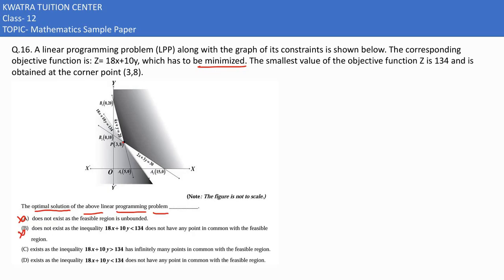It exists. Now, they are saying exist as the inequality has infinitely many points in common with the feasible region. It exists and it does not have any point in common with the feasible region.